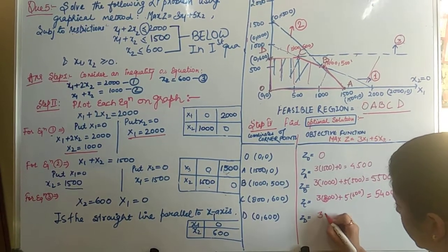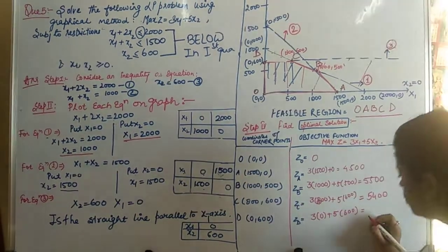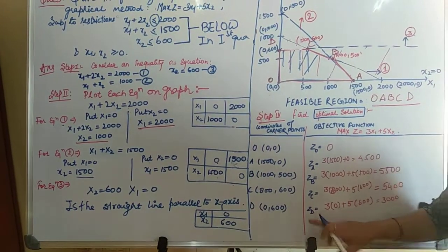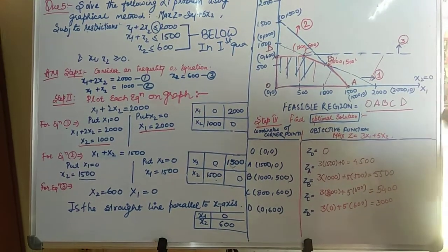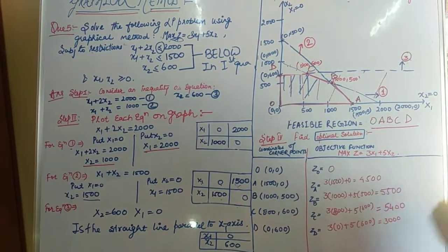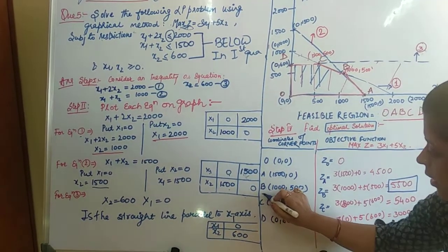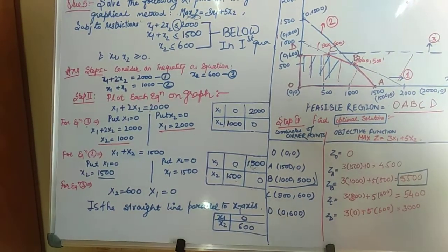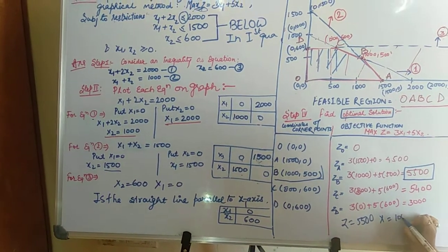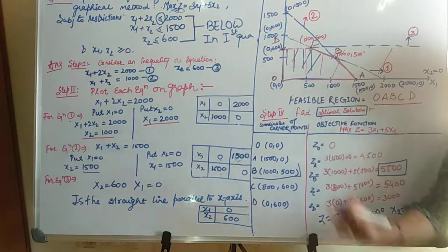Point D has x1 = 0 and x2 = 600, giving Z = 3000. These are the values of the objective function at the given corner points. Since this is a maximization problem, the maximum value of Z is 5500, which occurs at corner point B, where x1 = 1000 and x2 = 500. This is the solution of the given graphical problem.